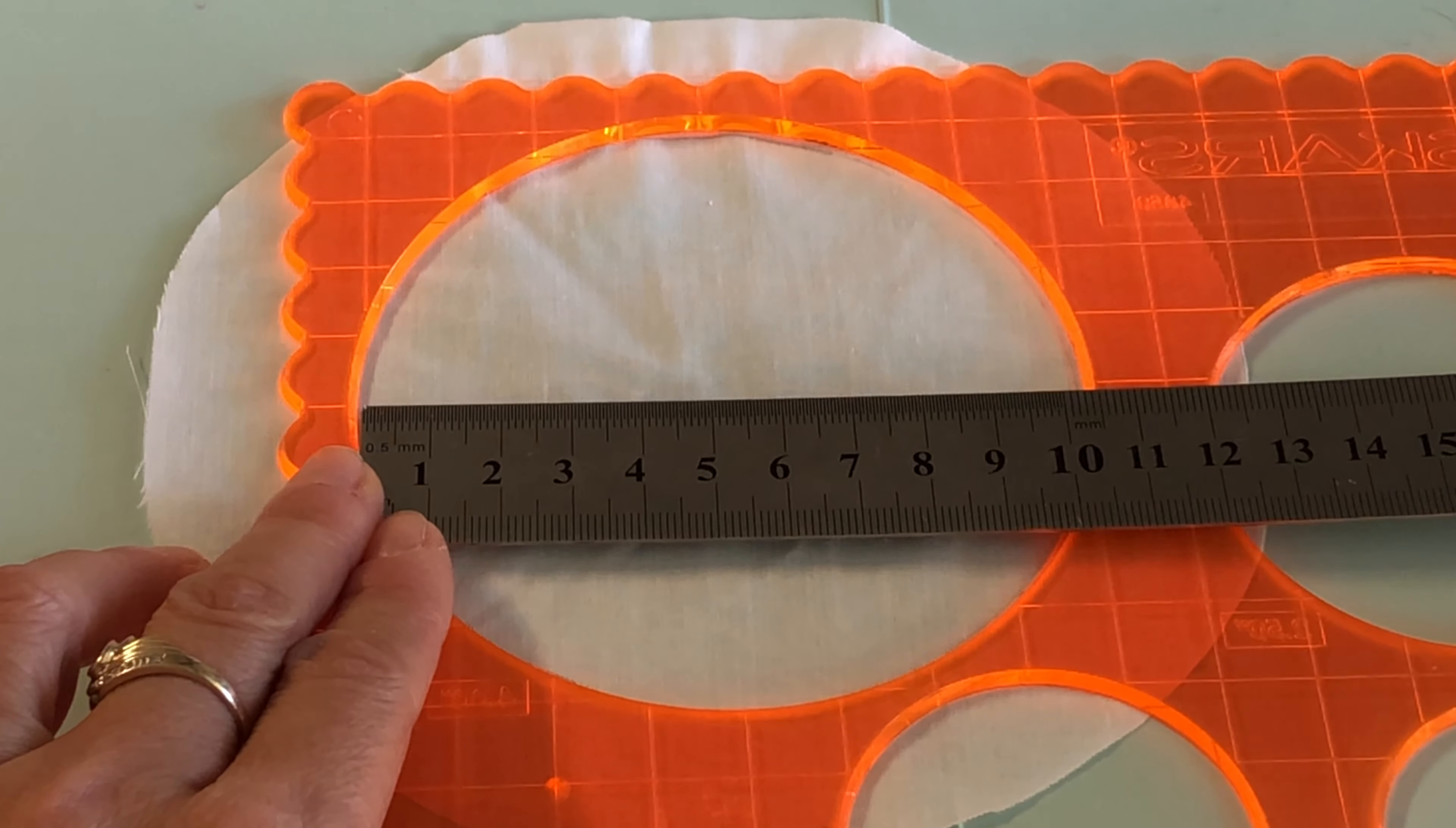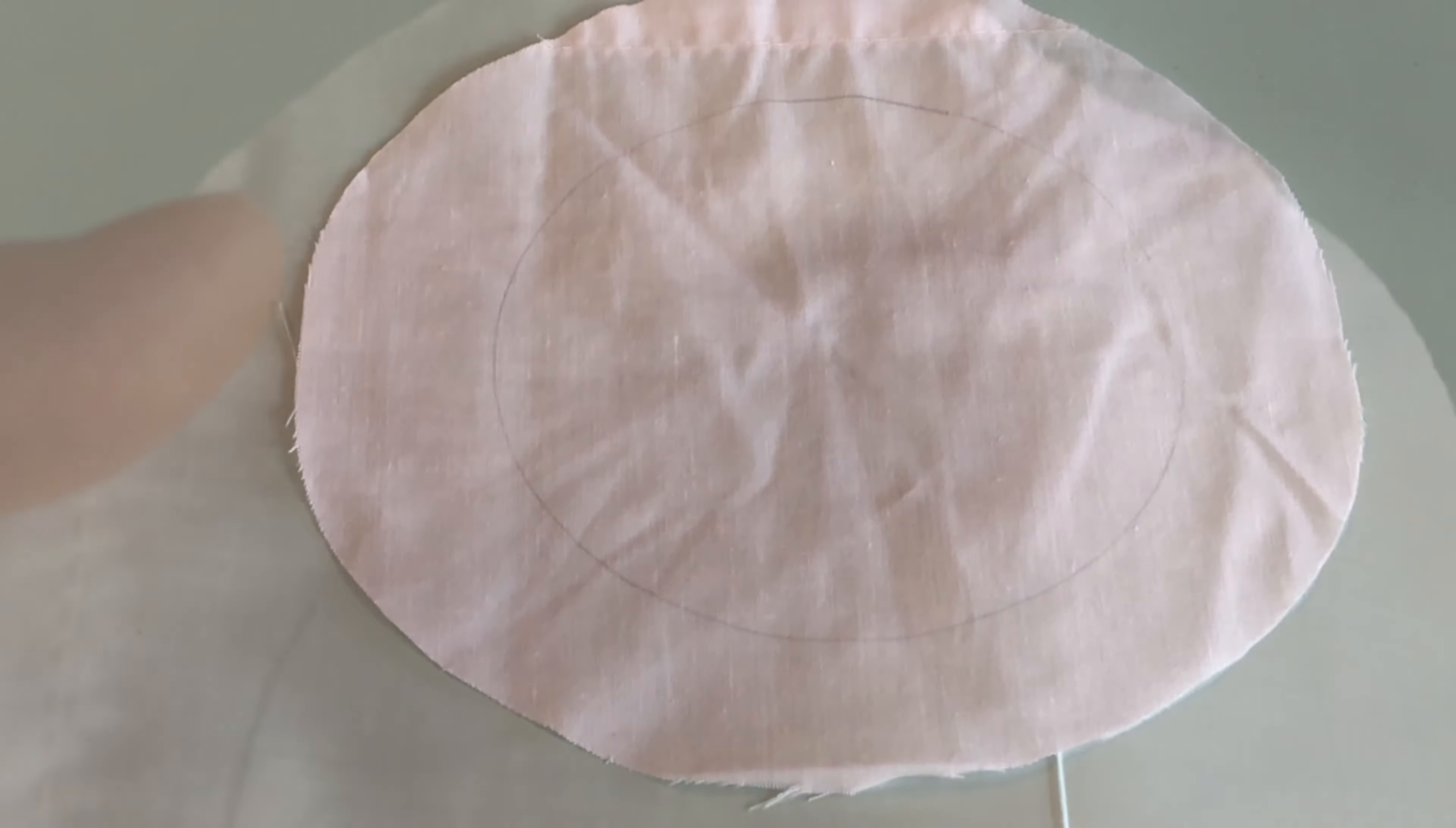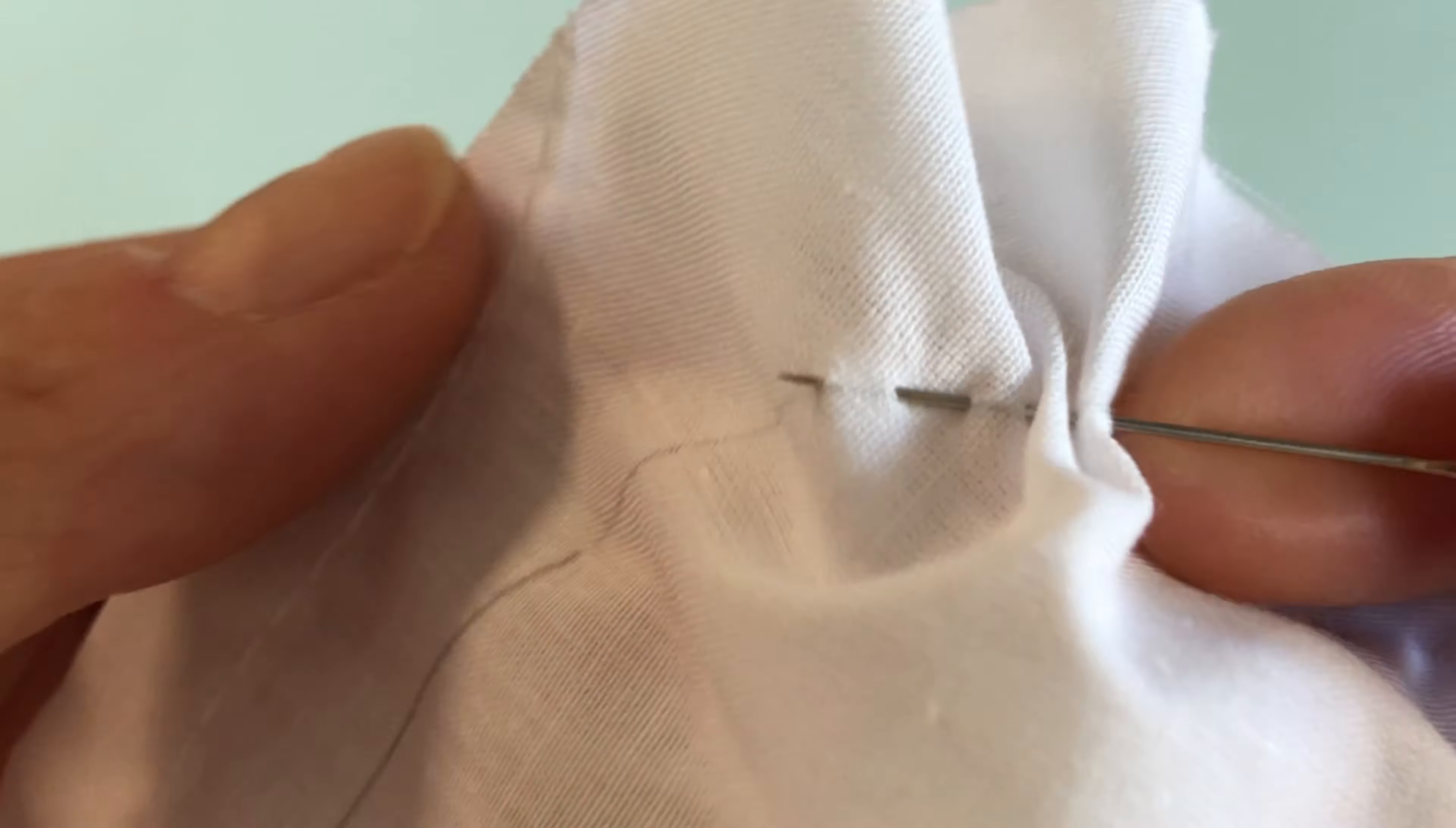Inside this, measure and mark a smaller circle about 10 centimetres in diameter. Using a simple in and out straight stitch, sew around the inner ring, but do not clip your thread just yet.